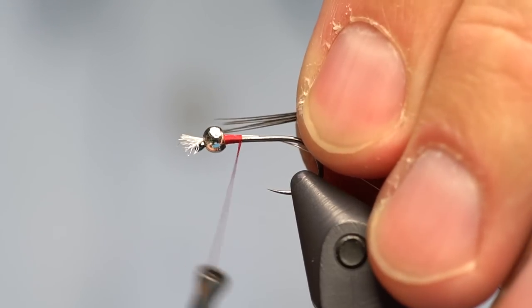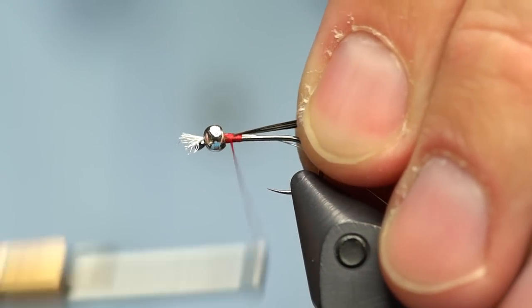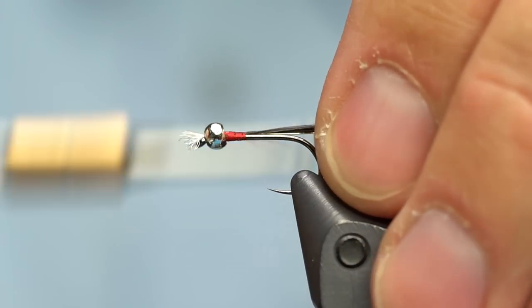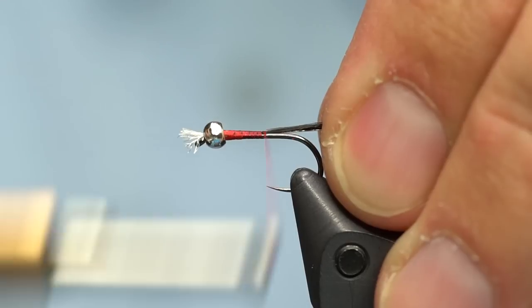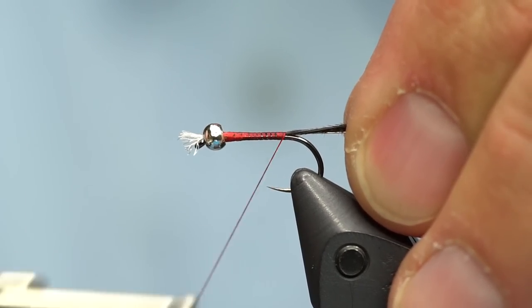I'm going to pull maybe five or six fibers away from the pheasant tail and I'm going to tie them in tip first. Just capture them with the thread right up here behind the bead. Then I'm going to wrap both the wire and the pheasant tail down the shank all at once.